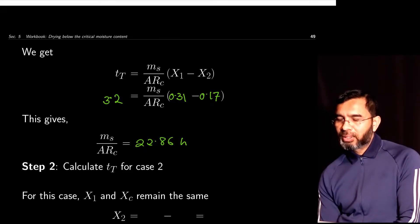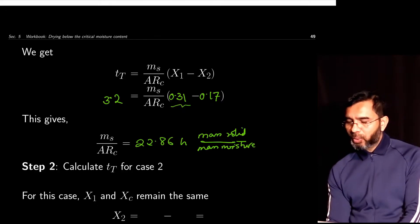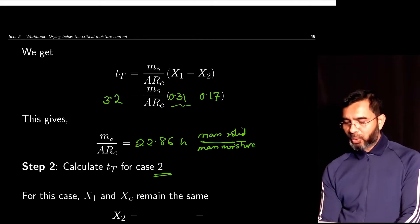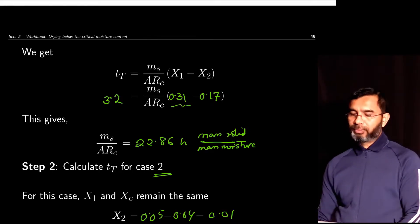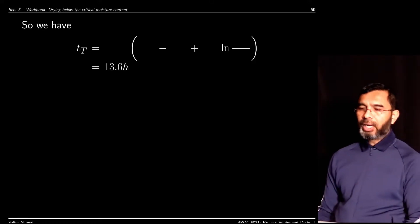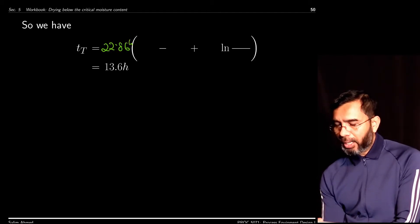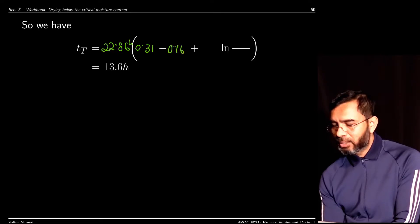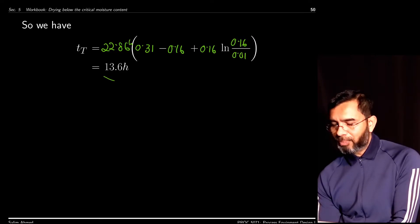For case 2, X1 and Xc remain the same, but X2 is different — the final moisture is 5%, so X2 (free) = 0.05 − 0.04 = 0.01. Using the known value of Ms/(A·Rc) = 22.86 hours and plugging into the full equation: t_t = 22.86 × [(0.31 − 0.16) + 0.16 · ln(0.16 / 0.01)], this gives a value of 13.6 hours.